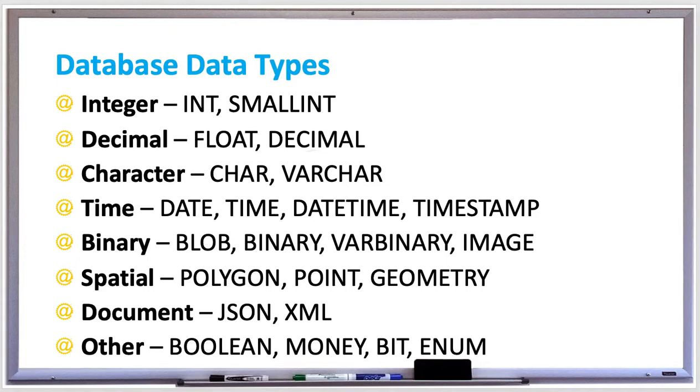Decimals are numbers that have fractional values or just numbers with decimal points in them. There's two types: float and decimal, which also just differ by memory size, decimal being more precise. Examples of decimal numbers are 3.14 or negative 5.25.